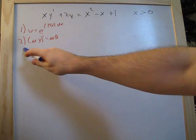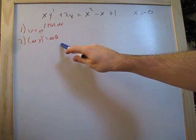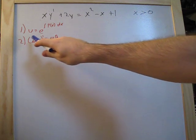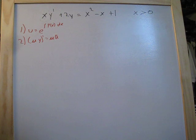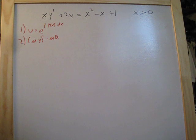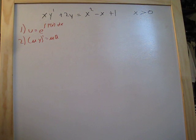I went ahead and wrote two formulas. Number one: u is equal to e to the integral of p(x) dx. Number two: u times y prime is equal to u times q. We'll figure out what that means later.